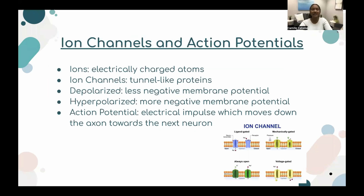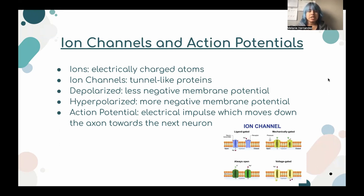Next are ion channels and action potentials, which generate the electrical signals in the brain. Ions are electrically charged atoms. Ion channels are tunnel-like proteins — ions can only cross a neuron cell membrane through these channels. When the channels are depolarized, there is less negative membrane potential. When hyperpolarized, there is more negative membrane potential. This voltage difference is the basis of generating an electrical signal. Action potentials are electrical impulses which move down the axon towards the next neuron.